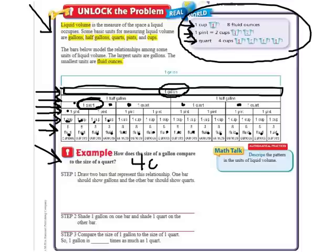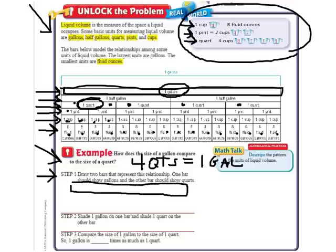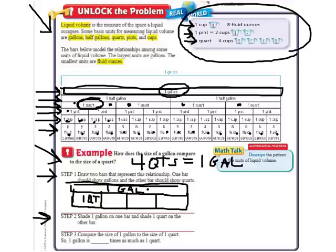We've easily just done that with counting the bars. Here they want you to work it out by drawing the bars to represent the relationship. So we'll draw what we saw up there. One big gallon bar is equal to four quarts. Each of these are quarts. If step two says shade one gallon on one bar and shade one quart on the other bar, we would see that the gallon is four times bigger than the quart.